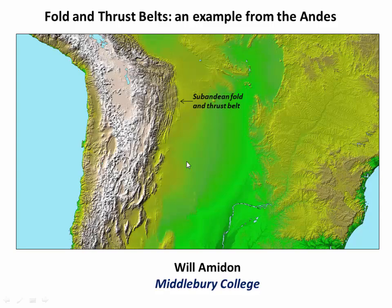Hi everybody, welcome to my video on Folded Thrust Belts, an example from the Andes. In this shaded relief image, we can see the Pacific Ocean to the west, the high Andes Mountains, and the Altiplano Plateau, and then the broad, low relief South American Craton. Separating the high Andes from the Craton is a broad north-south expanse of thrust faults and Folded Thrust Belts that accommodate compression as the Andes advance eastward out over the Craton. In this video, we're going to focus particularly on the sub-Andean Folded Thrust Belt.